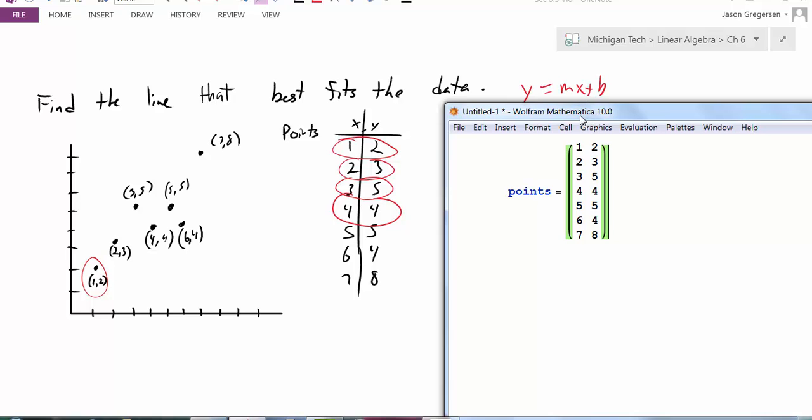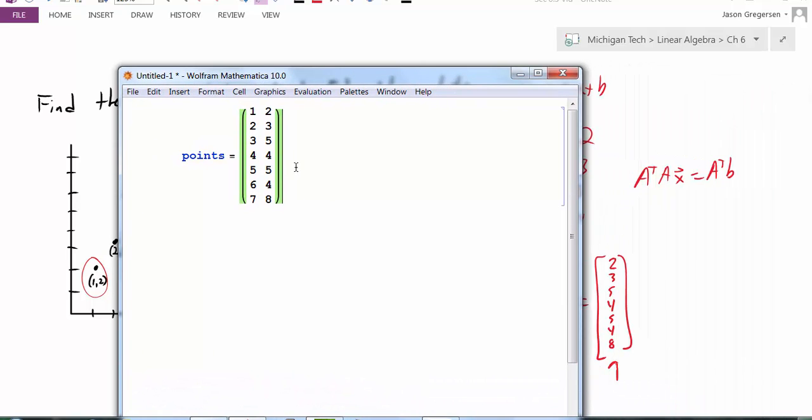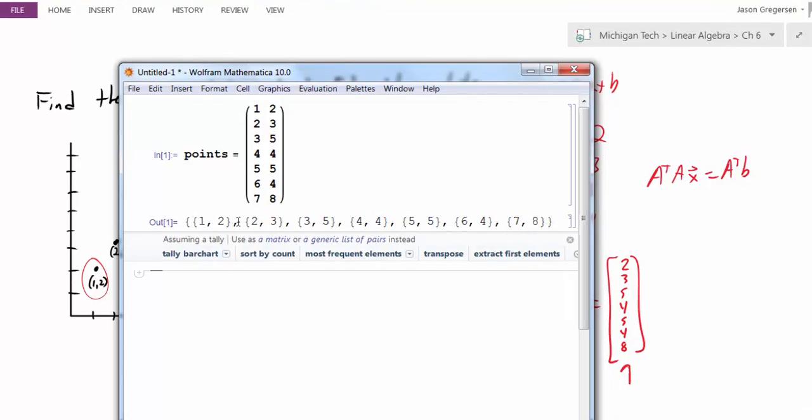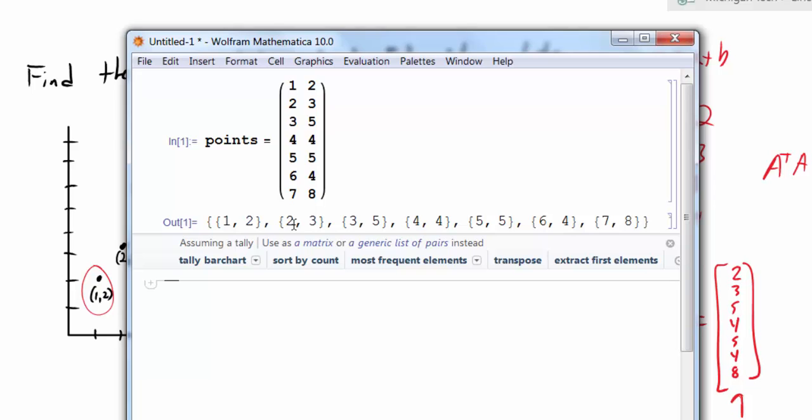So these will be all my points. Now if I just evaluate this, it will store those values into points. It will also show me how Mathematica sees that matrix. And it really does see it as a list of points.